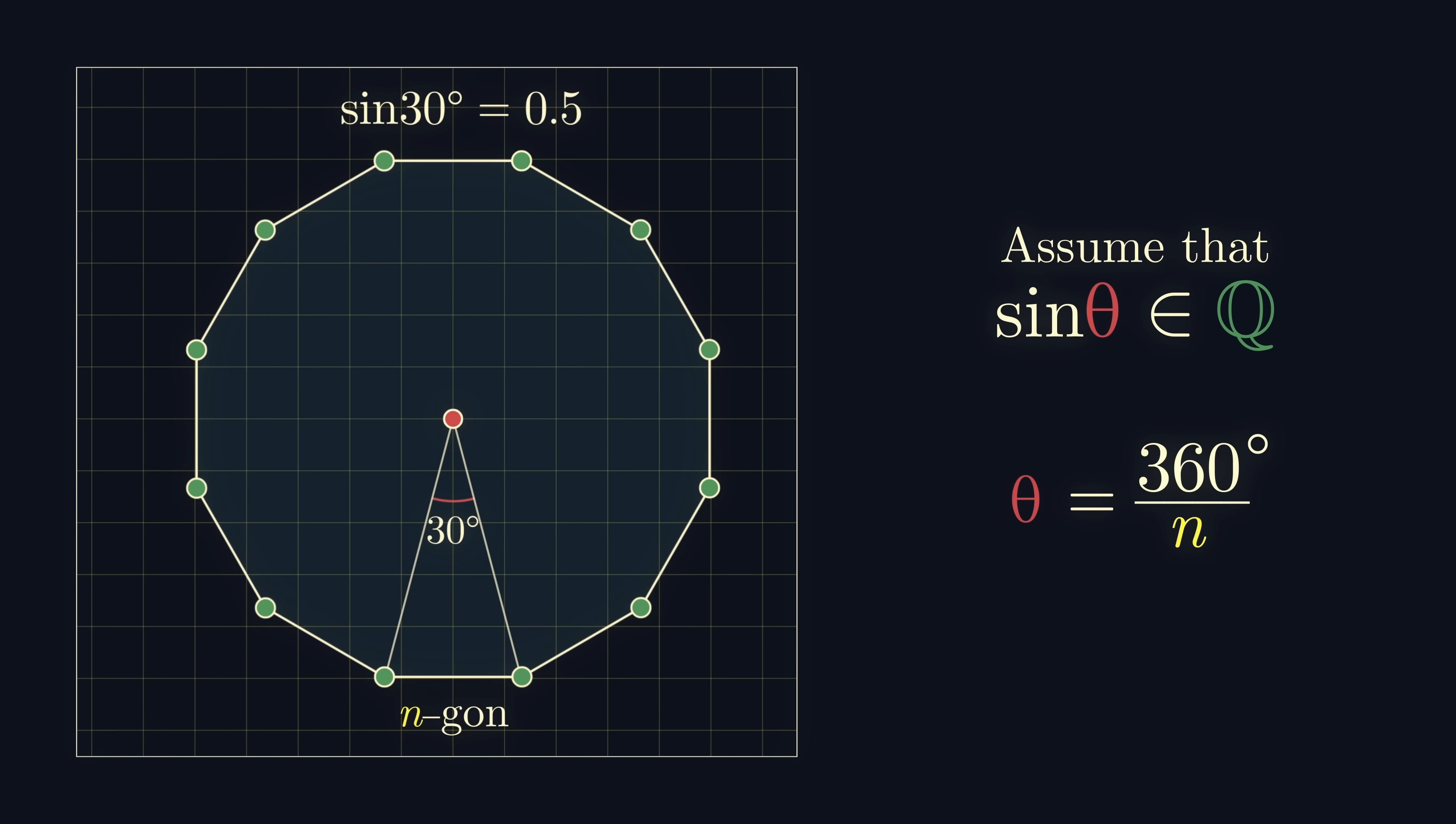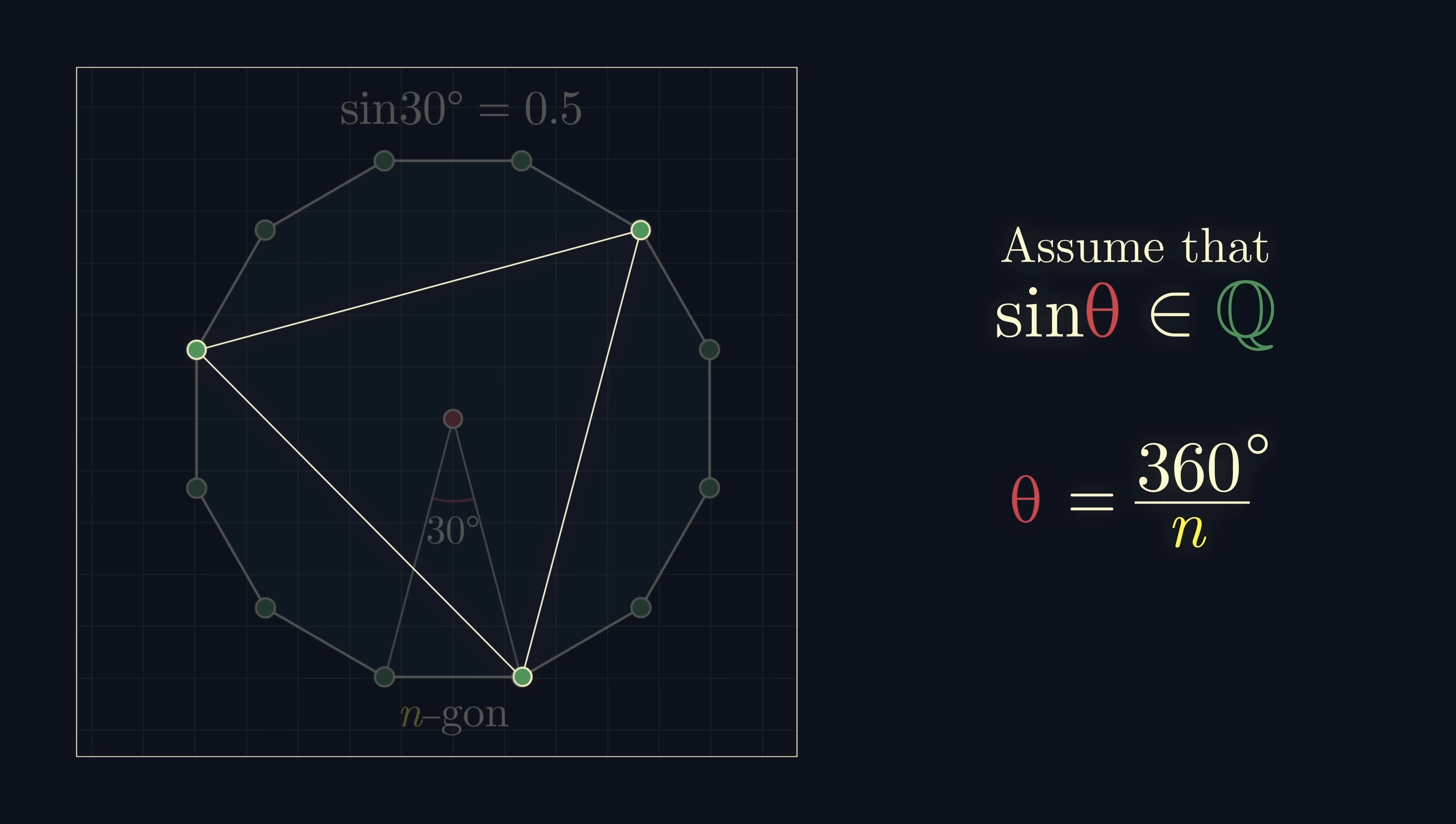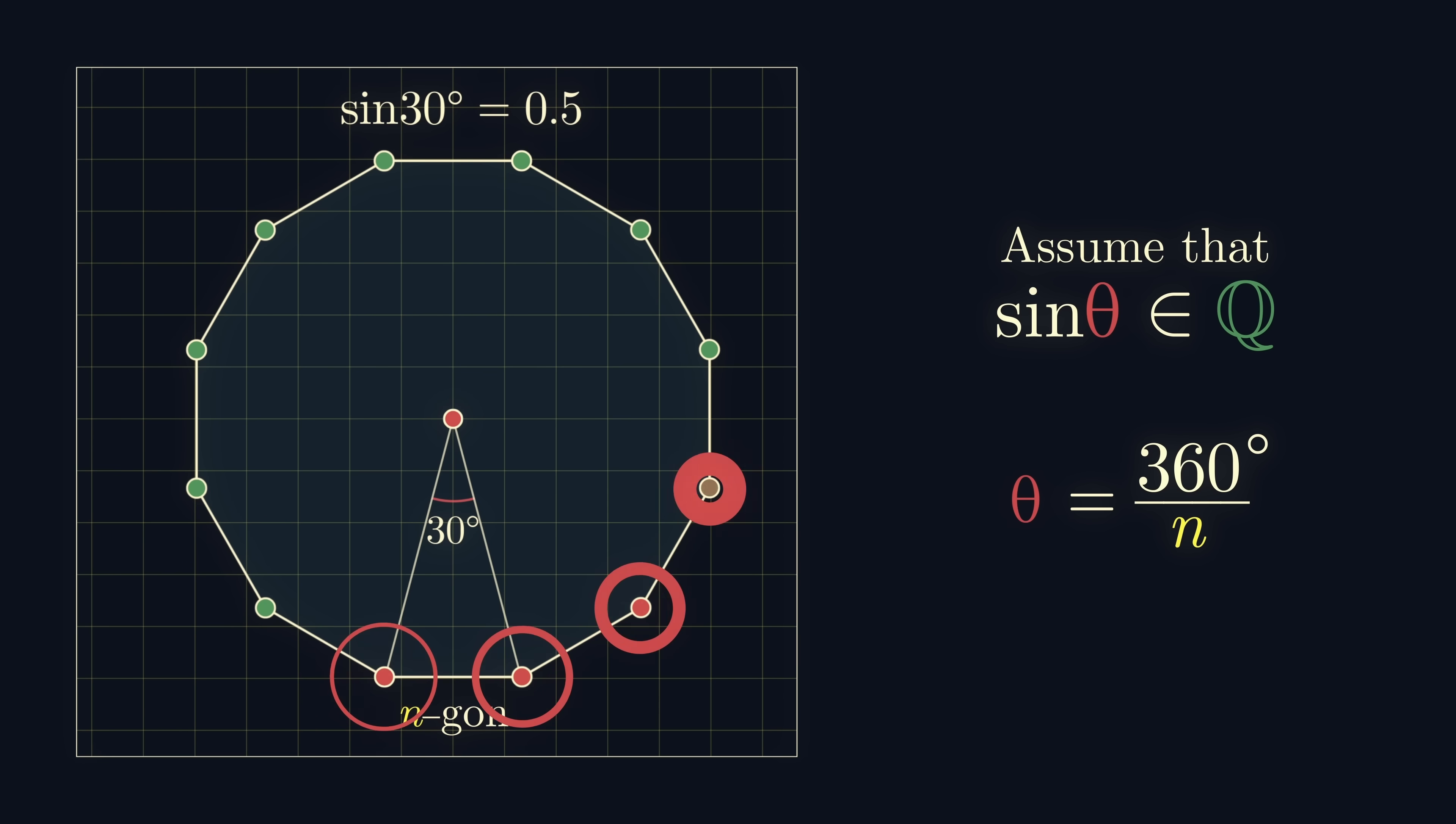However, if we could draw a regular dodecagon with integer vertices, then isolating every fourth vertex leaves us with an equilateral triangle. However, we already showed that it's impossible to draw an equilateral triangle with integer vertices, so this must also be impossible.